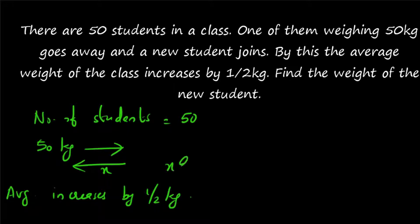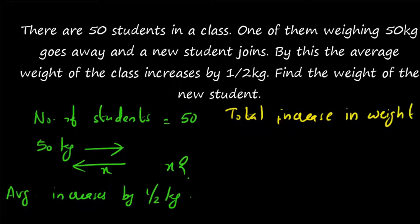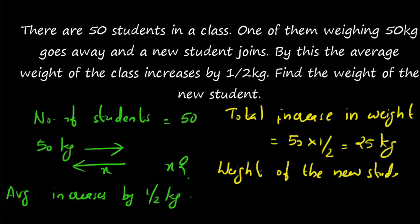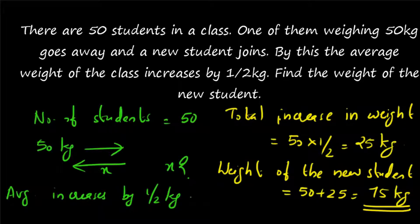How to find x? The average is increasing by half kg, so the total increase in weight will be equal to 50 into half, which gives you 25 kg. There is a 25 kg increase in the total weight. One student of 50 kg is going out and a new student is coming in, so the new student should weigh 25 kg more. The weight of the new student will be equal to 50 plus 25, which gives you 75 kg.